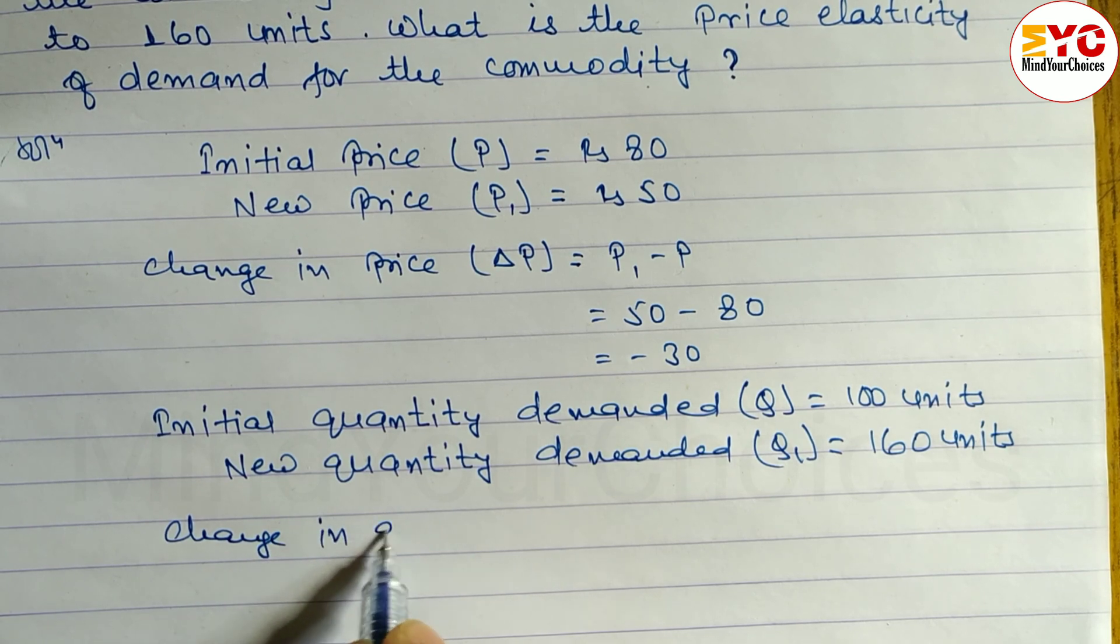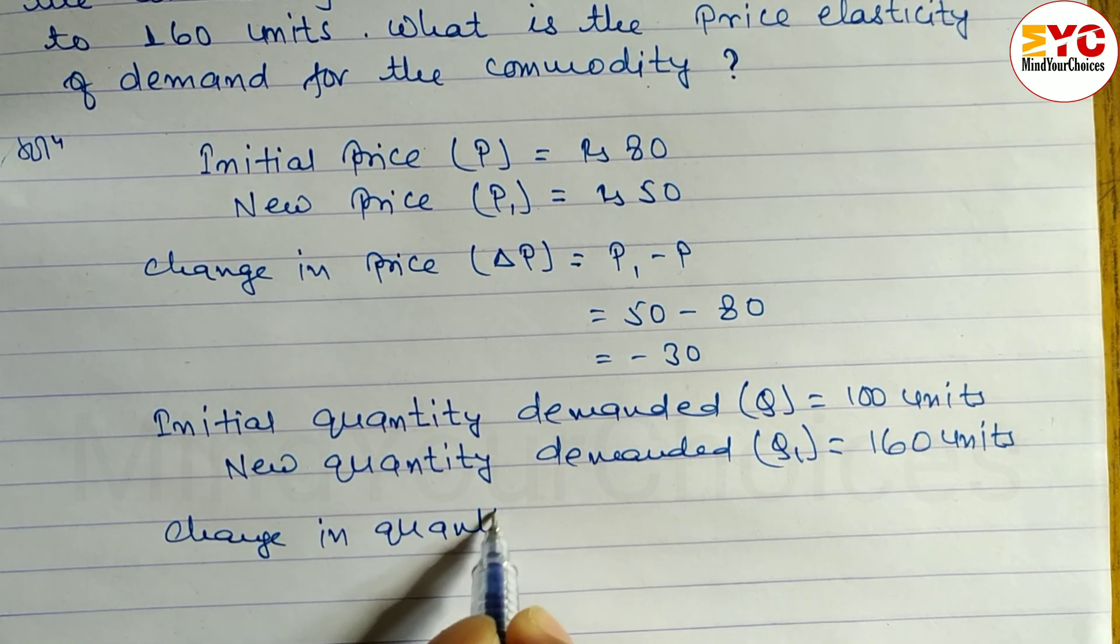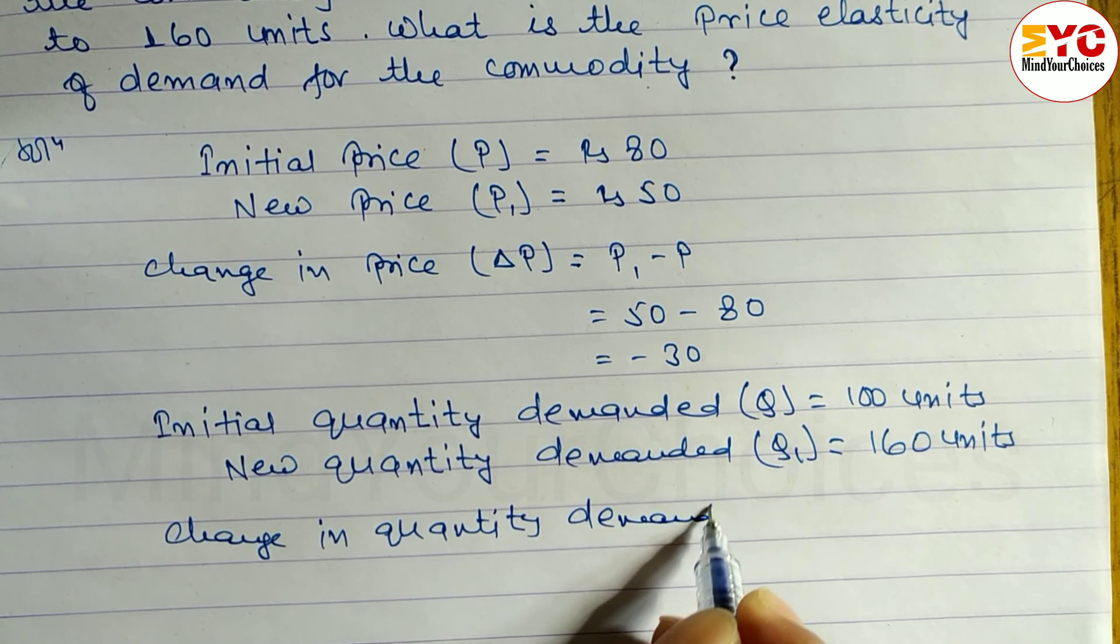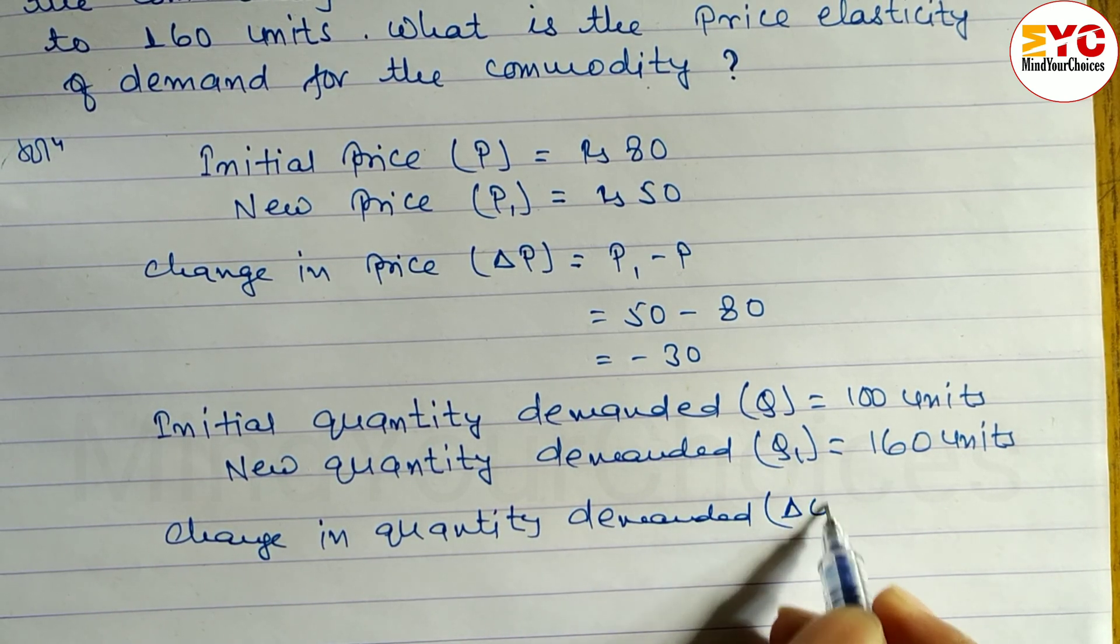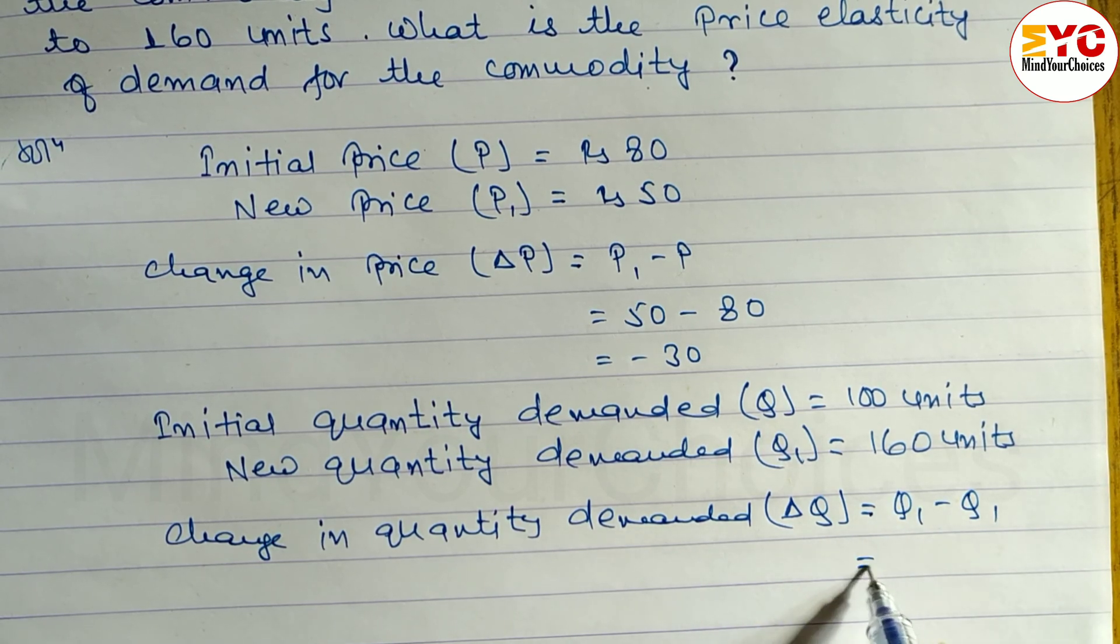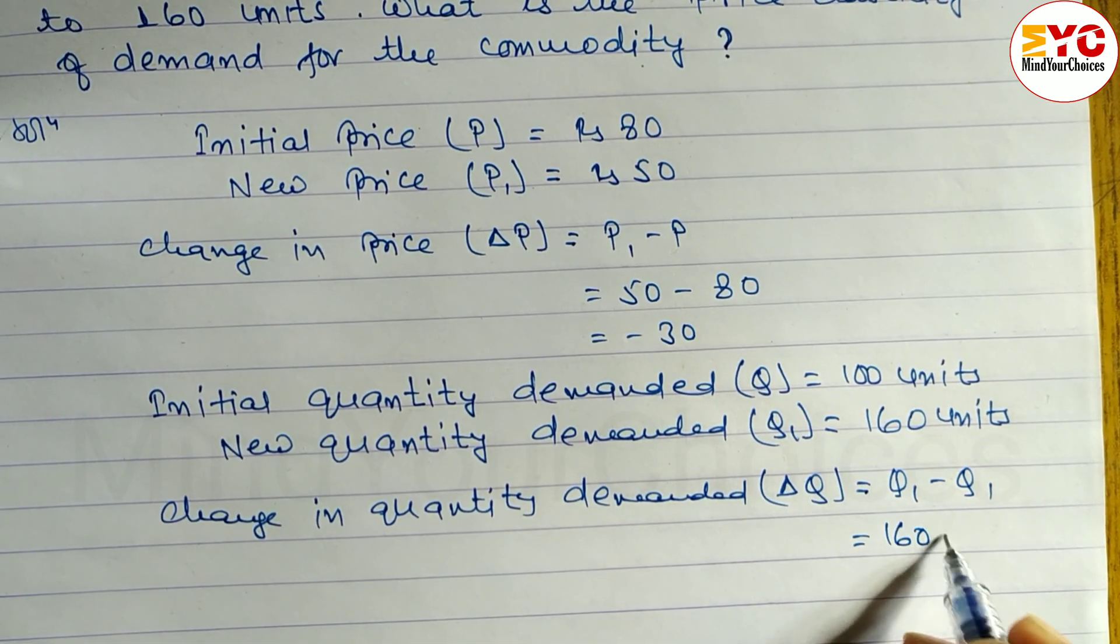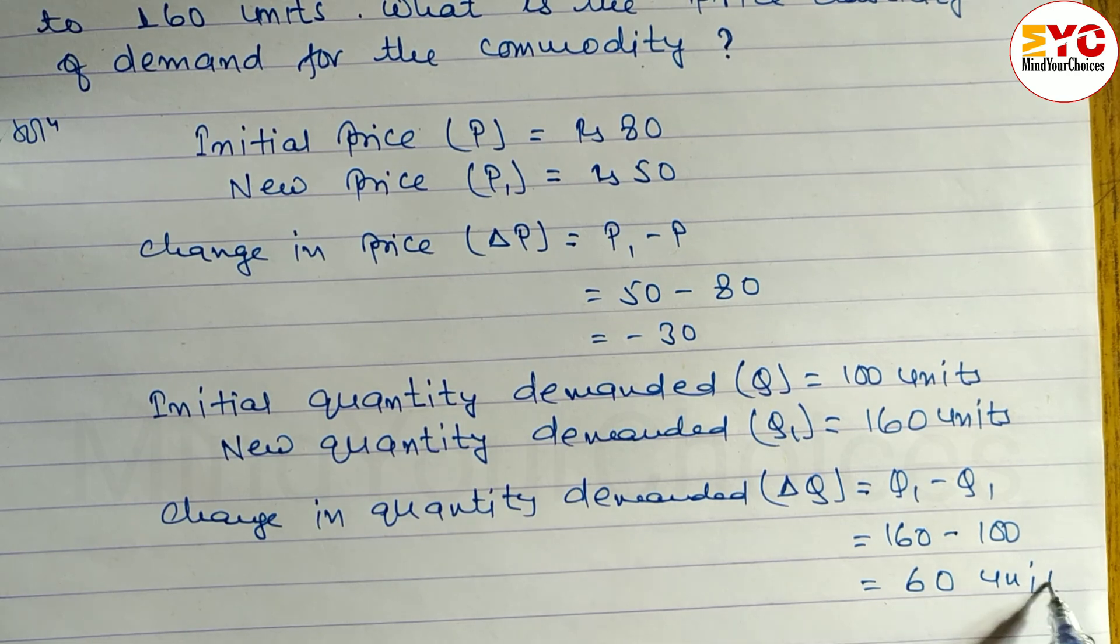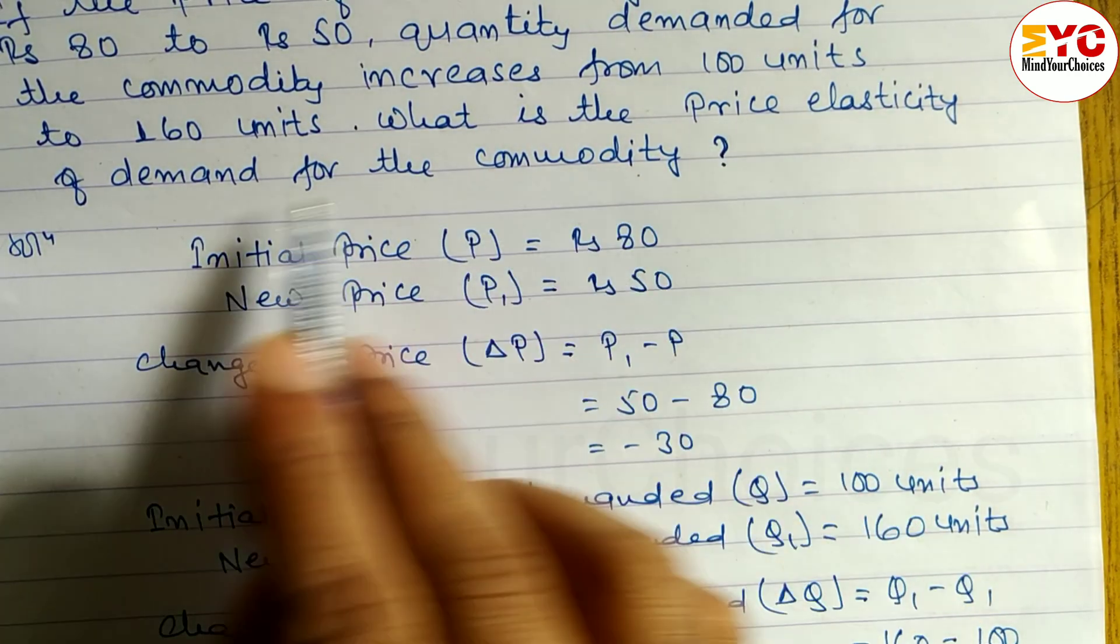Change in quantity demanded, which is denoted by ΔQ, is equal to formula Q1 minus Q. So 160 minus 100, we get 60 units.